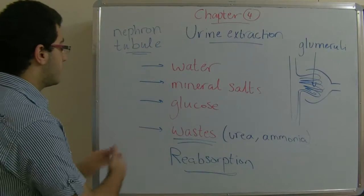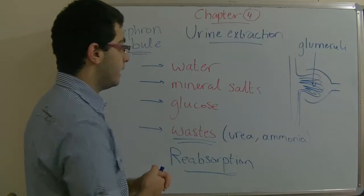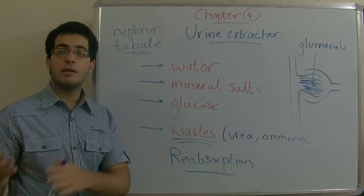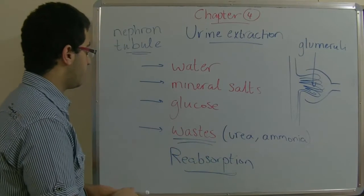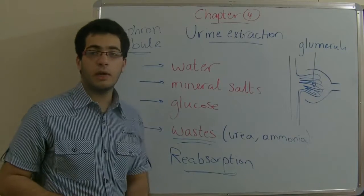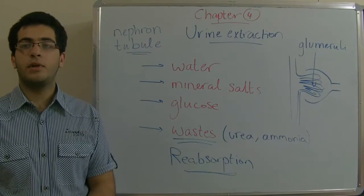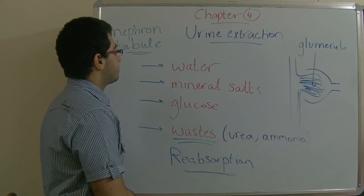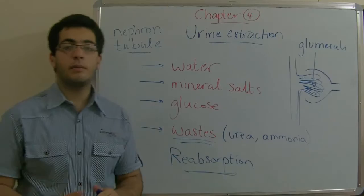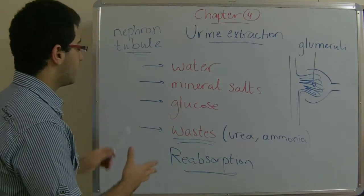all these wastes are collected in the collecting ducts. Then, they go through the ureter, then they fall into the urinary bladder, and after the urinary bladder is filled with urine, it contracts,